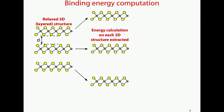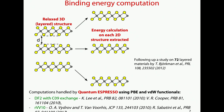When you have done this purely geometrical screening, you want to go a bit further and put a bit more physics. The idea is to try to split a 3D structure and see the energy of interaction between the layers. Here you need an ingredient that is not given for granted in DFT calculations, which are van der Waals interactions, because most of these compounds are held together only through van der Waals interactions. So you need to use van der Waals functionals. We have chosen two: DFT with C09 exchange and RVV10, though there are many more.